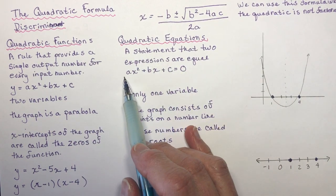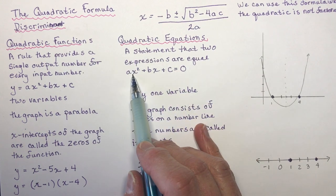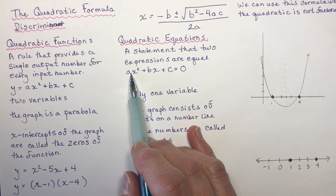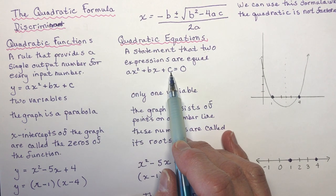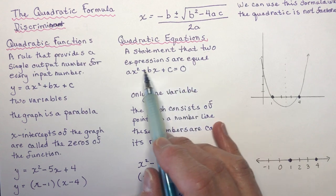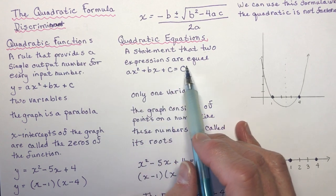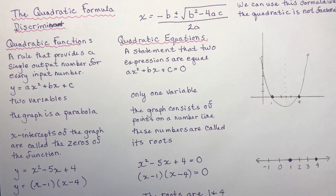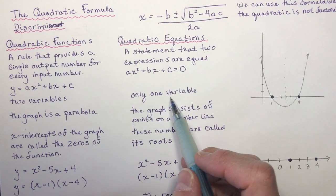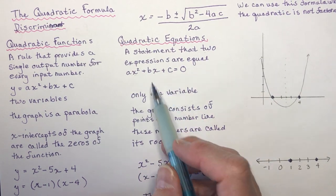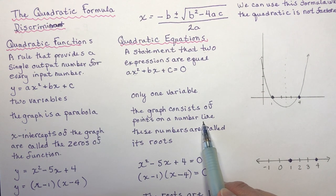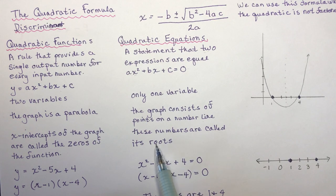On the other side, if we have a quadratic equation — that's a statement that two expressions are equal — we have this expression set equal to some number. It could be zero, or it could be another number that you bring over and set equal to zero. We did some of those in the last exercise when we were factoring. So there's only one variable in these equations, in this case just x, and the graph consists of points on a number line. These numbers are called its roots.